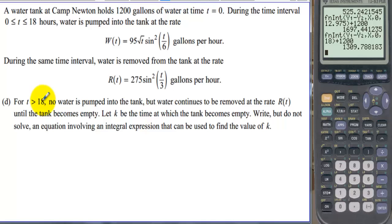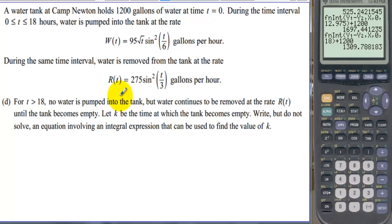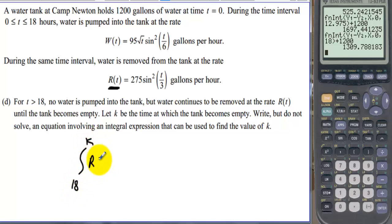Part D: For t greater than or equal to 18, no water is pumped into the tank, but water continues to be removed at rate R(t) until the tank becomes empty. Let k be the time at which the tank becomes empty. Write, but do not solve, an equation involving an integral that can be used to find k. Since at 18 hours we have 1310 gallons, we set the integral from 18 to k of R(t) dt equal to 1310. When it pumps out the remaining water, the tank will be empty.